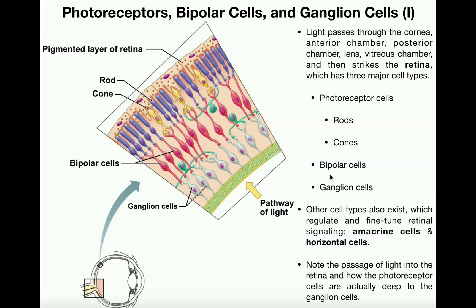These are the three major cell types. There are also a couple of other cell types called amacrine cells and horizontal cells. Most anatomy courses don't go into these very much, but they exist to fine-tune and regulate the functions of the other cell types, particularly bipolar cells and ganglion cells.